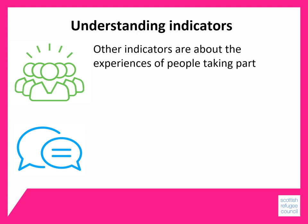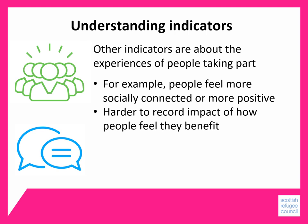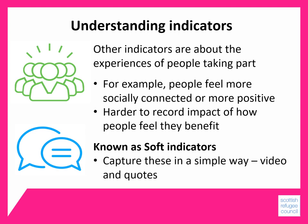The other kind of indicators are more about the experiences of people taking part in using your services — for example, do people feel more socially connected or more positive as a result of taking part in your group's activities? These are harder to record in terms of impact and how people feel they benefit. They are known as soft indicators, and you can capture people's experiences using simple methods like video recordings, photographs, and quotes of how people feel.